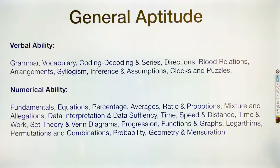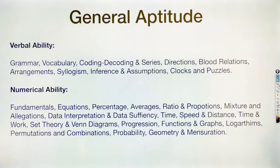For numerical ability, we have: fundamentals, equations, percentages, averages, ratio, proportional, mixtures, allegations, data interpretation, data sufficiency, time speed and distance, time and work, set theory and Venn diagrams, progressions, functions and graphs, logarithms, permutations and combinations, probability, geometry and mensuration. This is general aptitude.